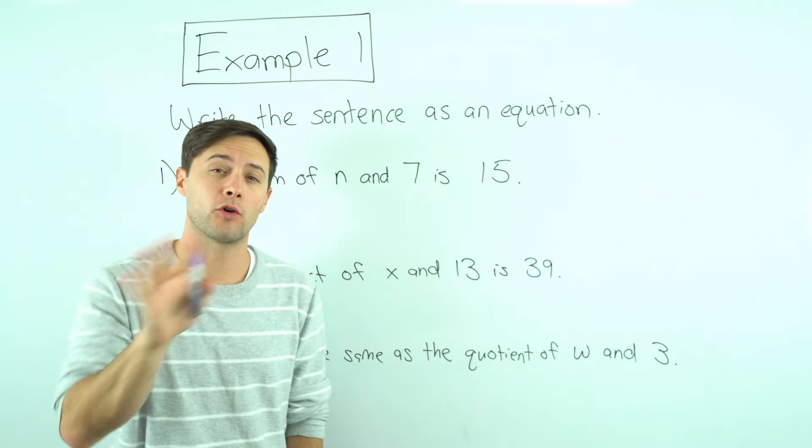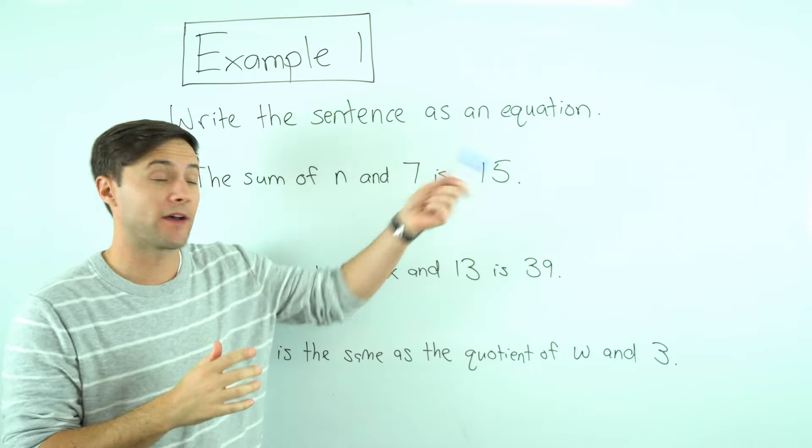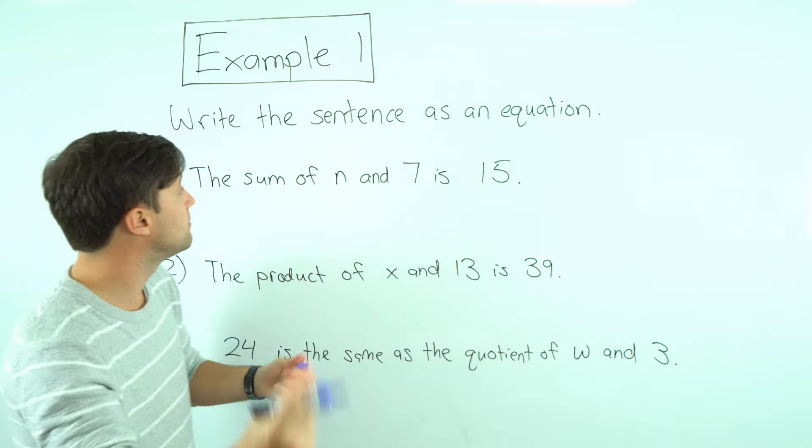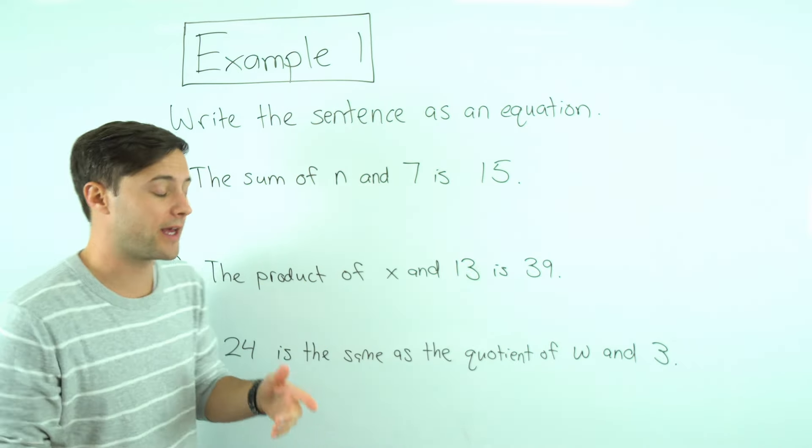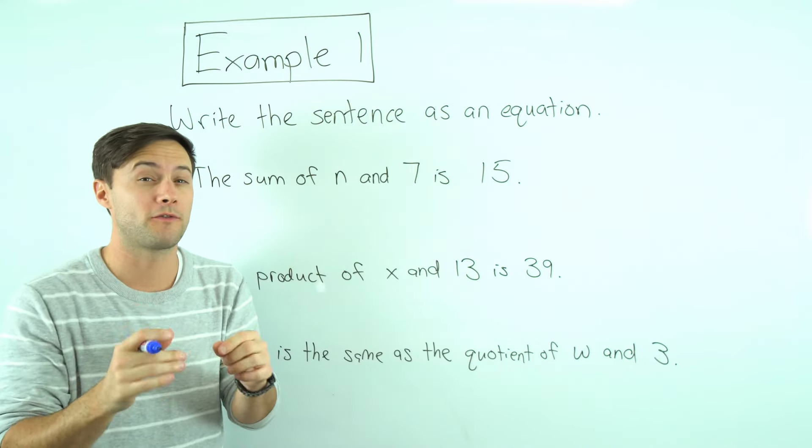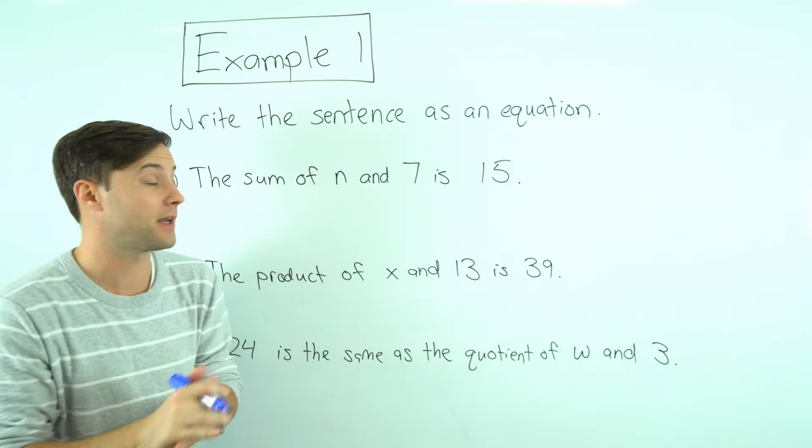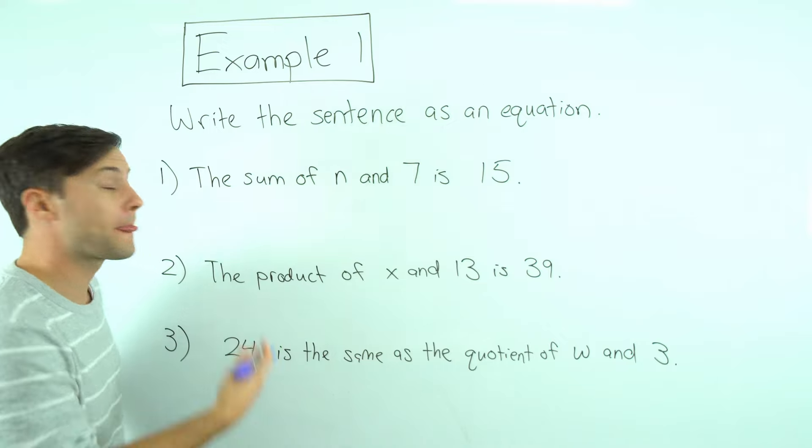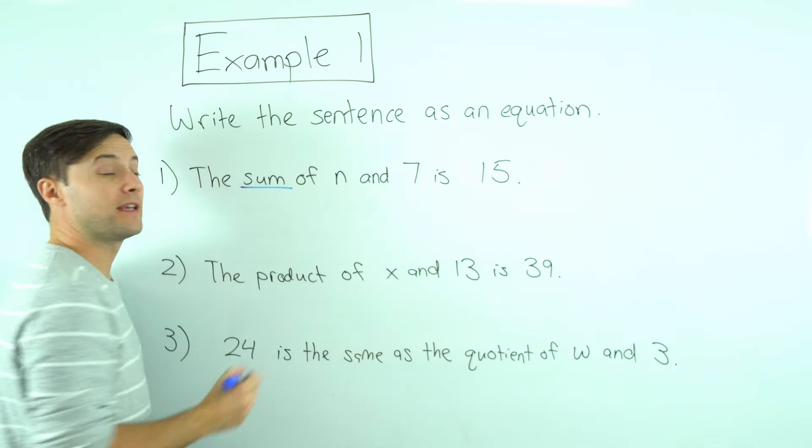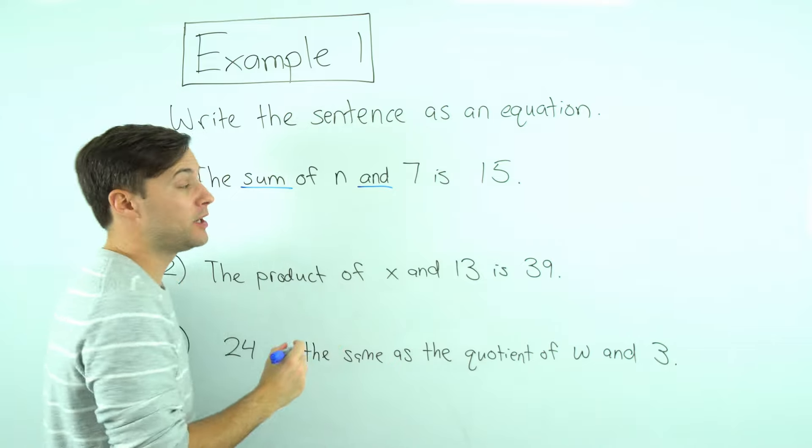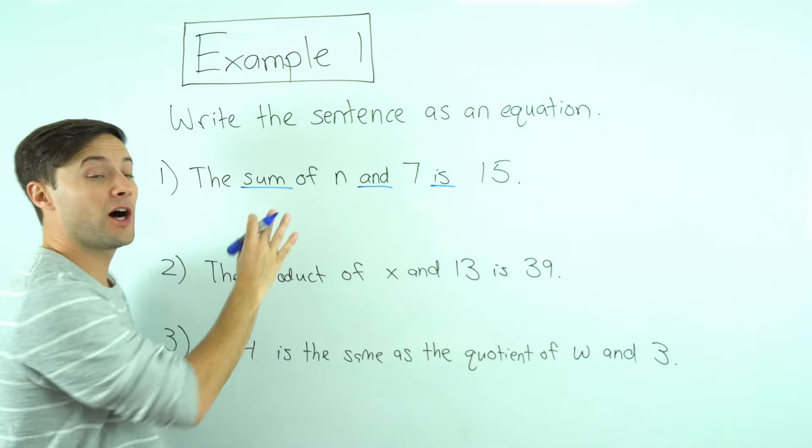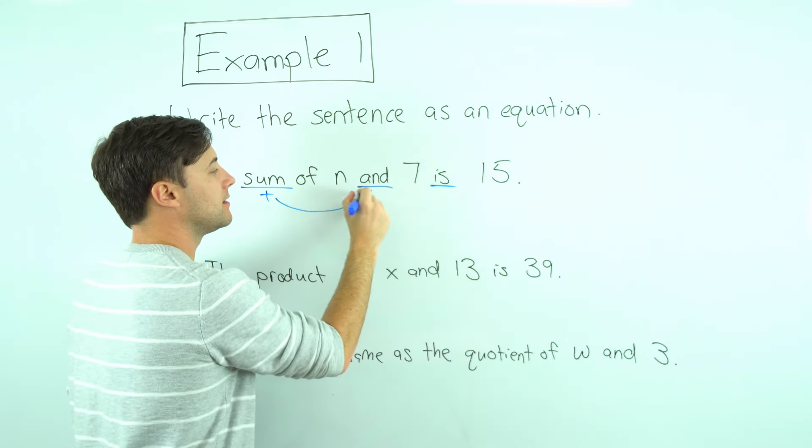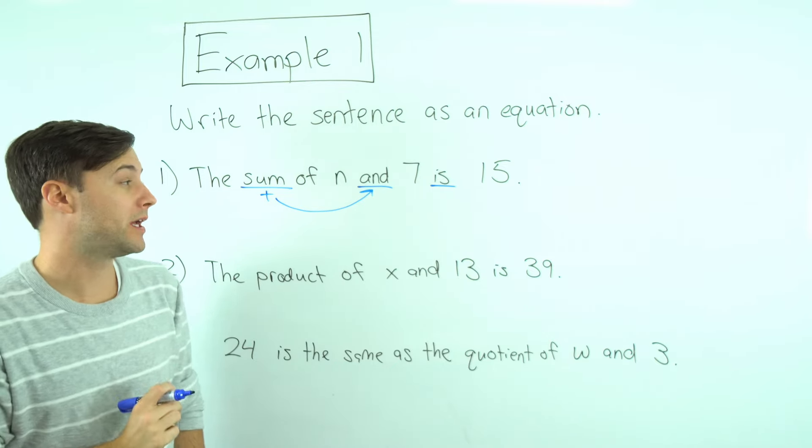If you haven't already learned how to write expressions, check out this link and watch that video. We are first looking for those key words that could either mean operations or the equal sign. Number one, the sum of n and seven is fifteen. Sum is a key word, and is a key word. Sum means answer of addition. The and is where that addition goes in my equation.